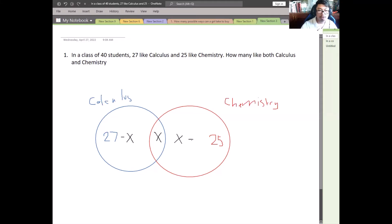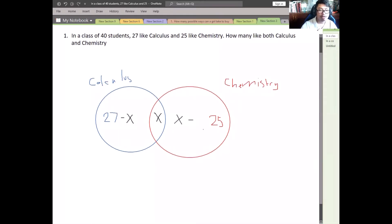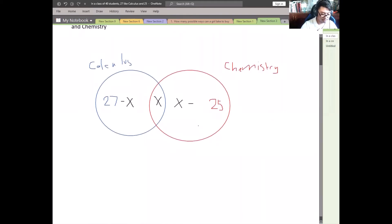It denotes out of the 40 students or out of the total students. By using our equation, by writing this in an equation of 40 students, this is for calculus, this is for both calculus and chemistry, and this is for chemistry. This equals to 40 students.